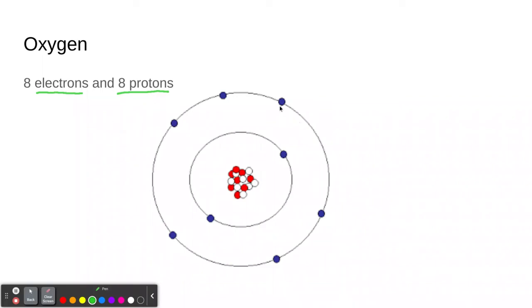But if one of these electrons leaves the atom, now we have more protons. And you should know that protons have a positive charge, and electrons have a negative charge, and neutrons have no charge. So if we lose an electron, now we have an oxygen atom that is positive. It's a positive ion. It has a charge to it because it has more protons. If it had more electrons, it would be a negative ion.